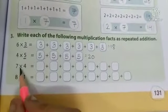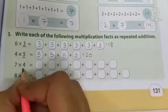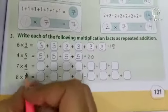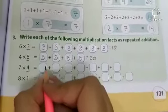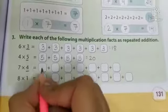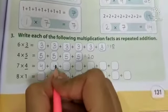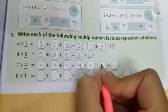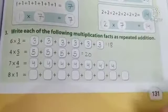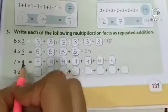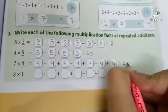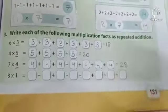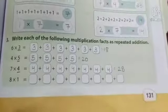Next, 7 into 4. So 7 times 4. We have to write 4 how many times? 7 times. So 1, 2, 3, 4, 5, 6, 7. Now 7 fours are 28, or 4 sevens are 28. Alright?